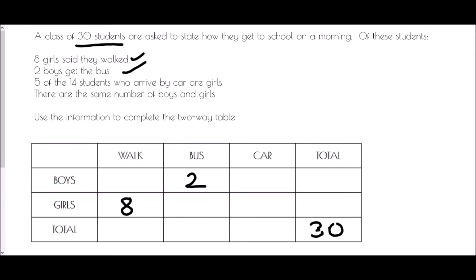Let's tick off the information as we've used it. The next piece is an important one — it tells us that five of the 14 students who arrive by car are girls. This is actually two pieces of information in one. It tells us that 14 students arrive by car, so that is the total for the car column. But it also tells us that five of those students are girls, so in the car column, the girls must be five.